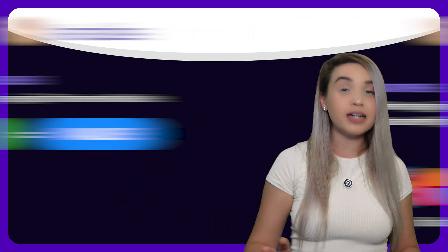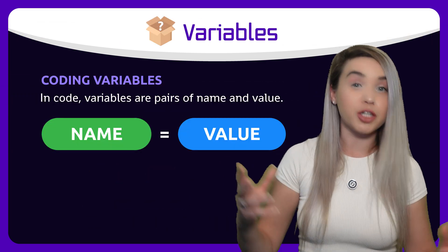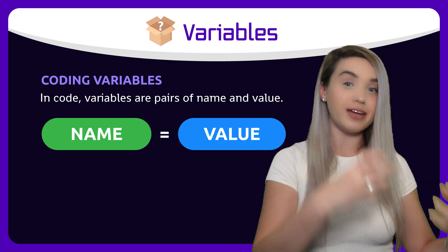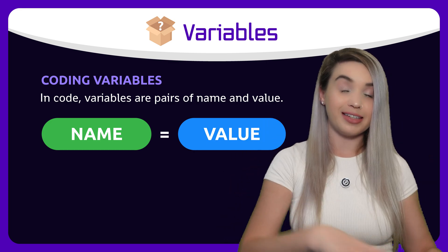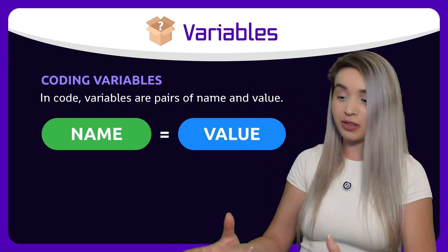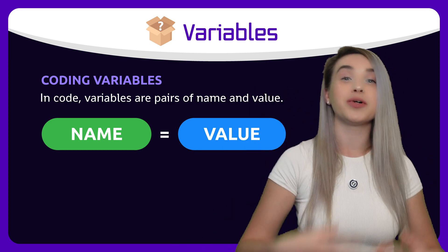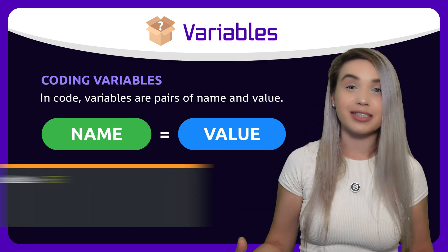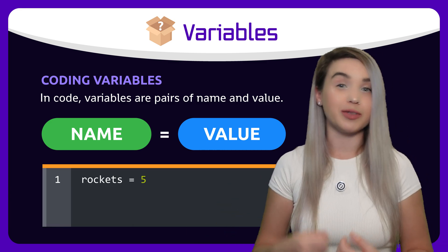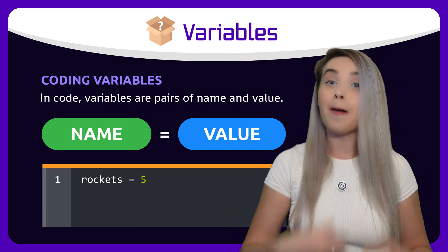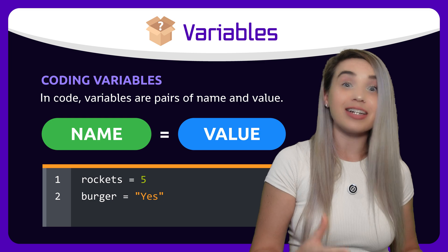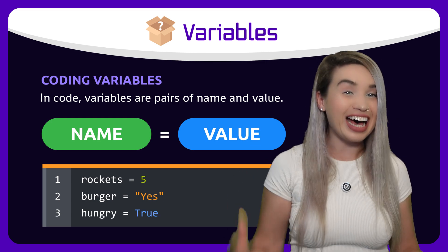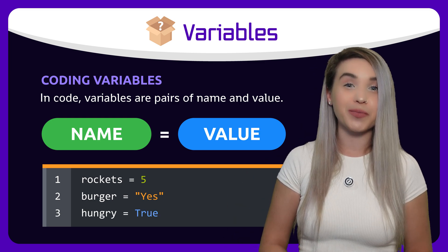Now, variables in terms of code are pairs of name and value. The name comes first, and it equals the value. So, for example: rockets equals 5, burger equals 'yes', and hungry equals true.